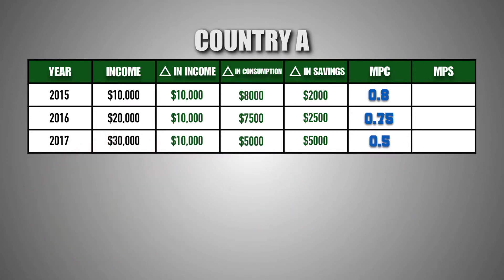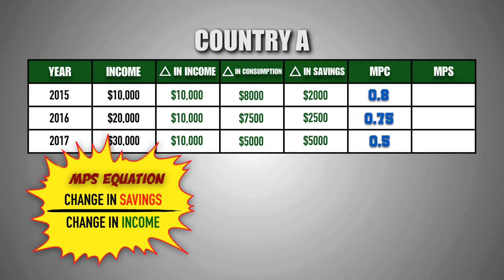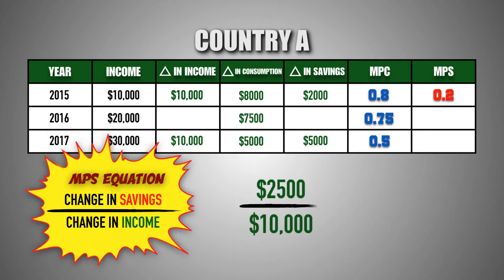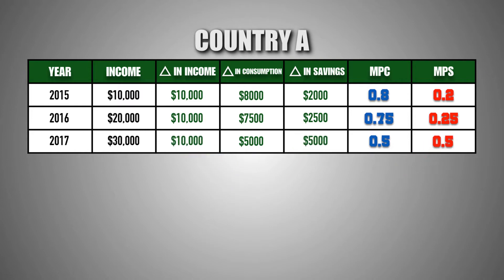Now for the marginal propensity to save. To calculate the MPS, we take the change in savings and divide by the change in income in each year. In 2015, the MPS in Country A was 0.2 — consumers saved 20 cents of every new dollar. In 2016, the MPS was 0.25 — consumers saved 25 cents of every new dollar. In 2017, the MPS was 0.5 — consumers saved 50 cents of every new dollar.